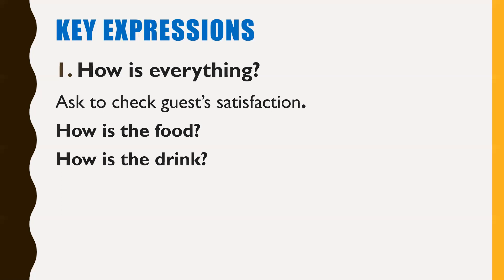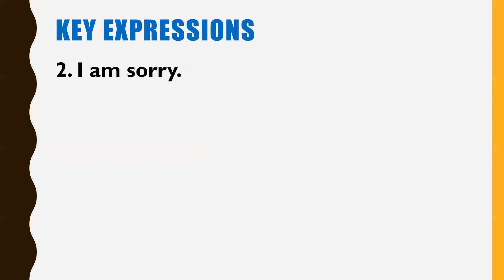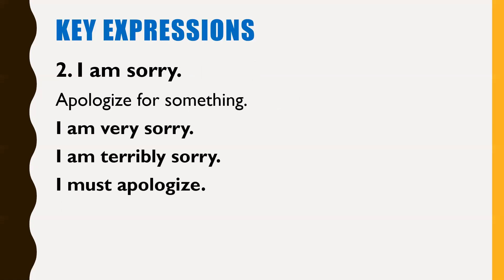The second expression is 'I am sorry.' You may say this when you make a mistake, or when you feel sorry about something you cannot help, or something is not available. You can add more to increase the level of apology — like 'I am very sorry,' 'I am terribly sorry,' or instead you may say 'I must apologize,' which means the same as 'I am sorry.' So those are some options when you want to express sorry.